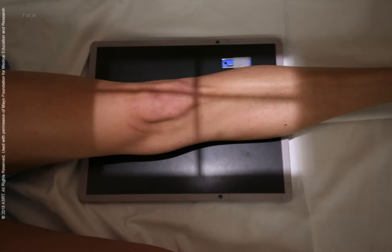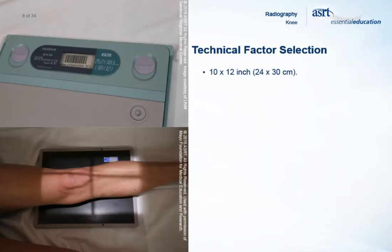Anatomical markers are placed on the image receptor to identify the anatomical side being examined. The patient's gonads are shielded, with the shield placed between the x-ray source and the patient. Instruct the patient to hold very still, but no breathing instructions are necessary. A 10 by 12 inch or 24 by 30 cm image receptor is used for an AP projection of the knee and is adjusted lengthwise. The SID is set at a minimum of 40 inches, although some departments may require a longer SID. Collimation is adjusted to 10 inches by 12 inches.